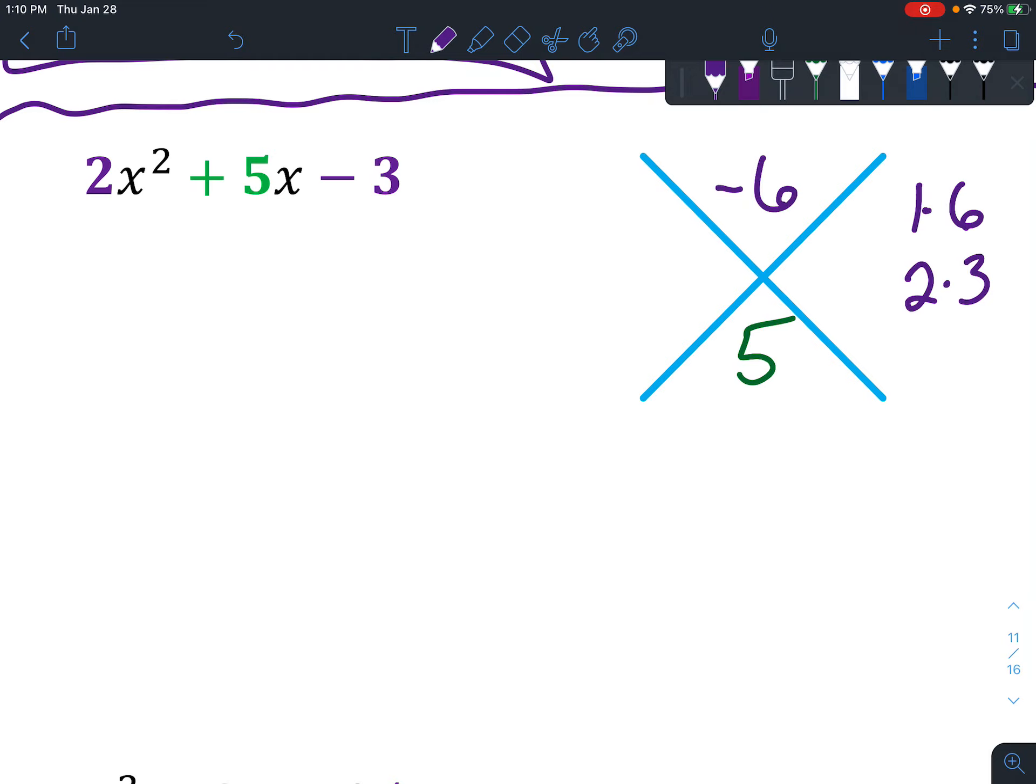A lot of times your first instinct is to say 2 times 3, but the problem is, if you had 2 and 3, they could add to get 5, but they can't multiply together to get negative 6 unless you make one of them negative. And once you make one of them negative, when you add them, they're not going to equal 5. So that's why those don't work. A lot of times I'll think about the process and then I'll add in the negatives and positives after.